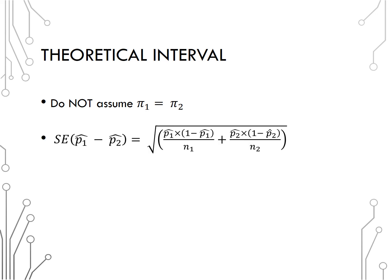In a confidence interval, the standard error of the difference in sample proportions, without assuming pi 1 is equal to pi 2, is written as the square root of p hat 1 times 1 minus p hat 1 over n1 plus p hat 2 times 1 minus p hat 2 over n2. Then we can calculate our confidence interval by finding our statistic p hat 1 minus p hat 2 plus or minus some multiplier, which will be given, times that standard error that we just calculated.